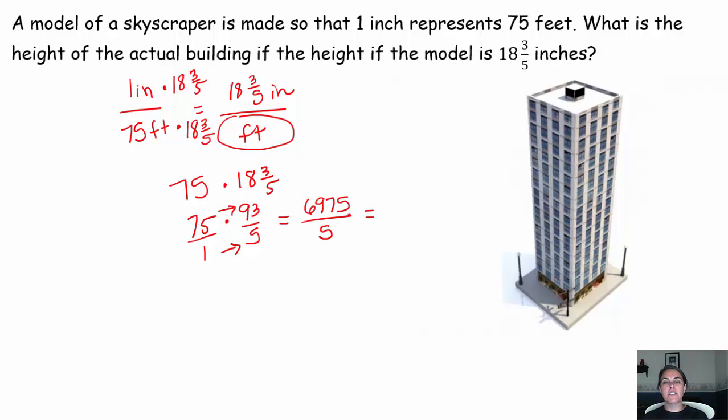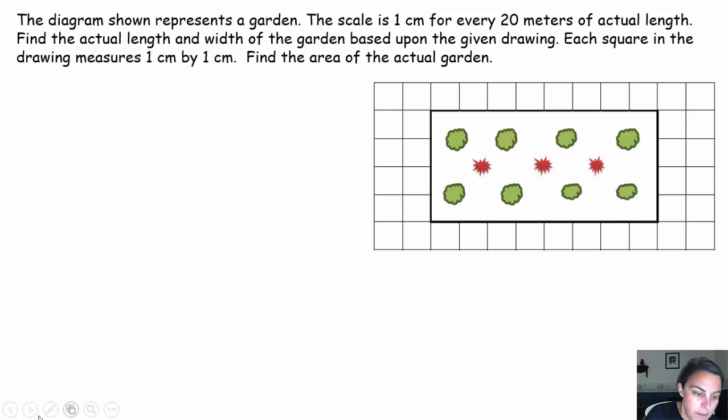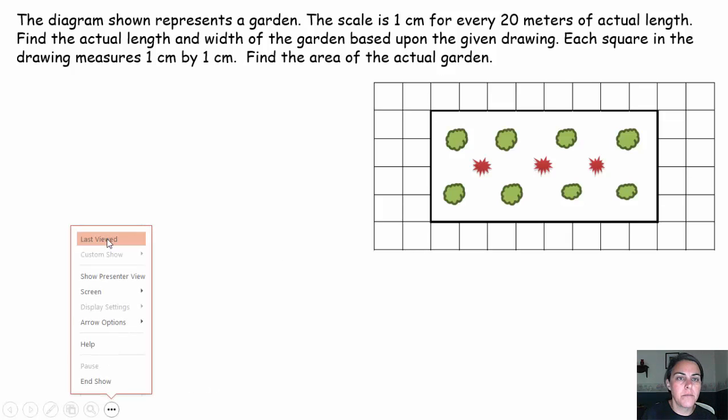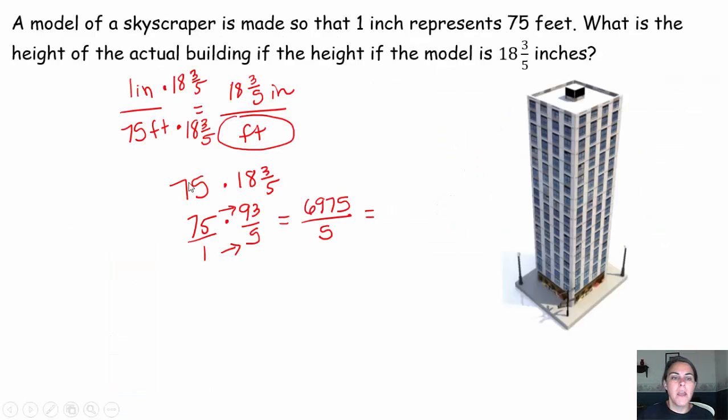75 times 93 is 6,975 divided by 5, which is 1,395. So this building is 1,395 feet tall in actuality.